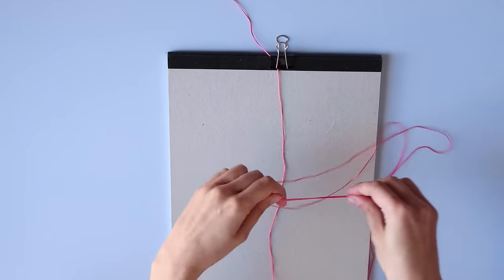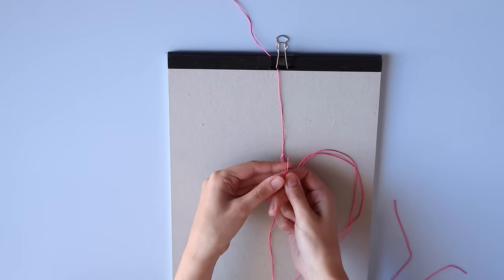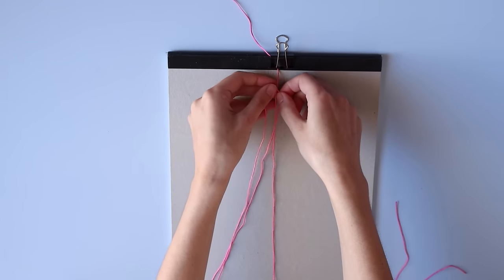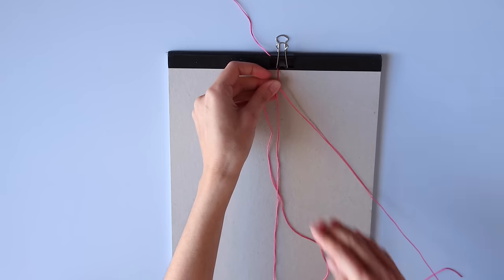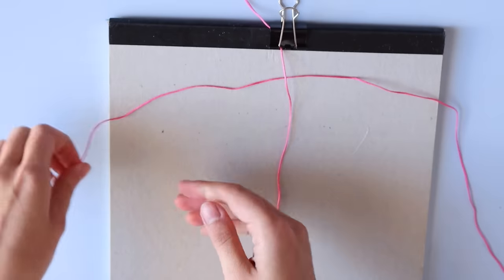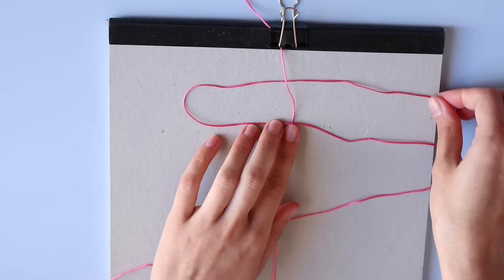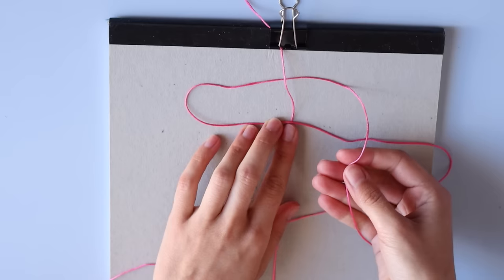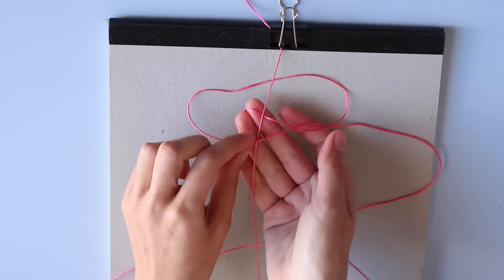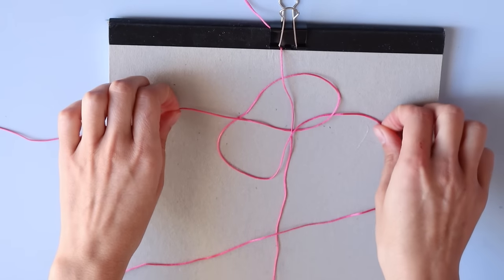Then fold the longer cord in half and place it behind. Grab one of the cords, I'm gonna start with the left one, cross it over the one in the middle, place the right one over it and bring it into the loop coming from the back. Then tighten.